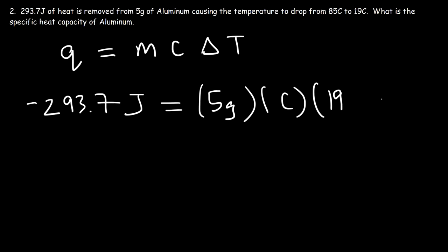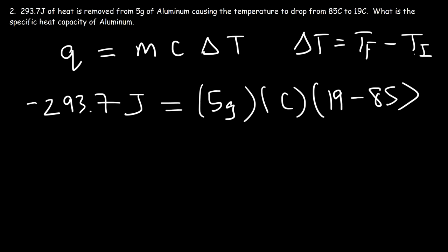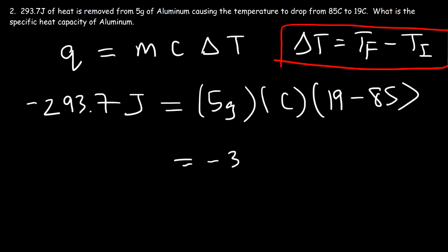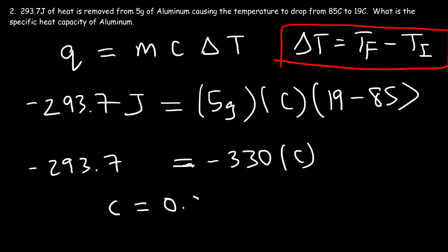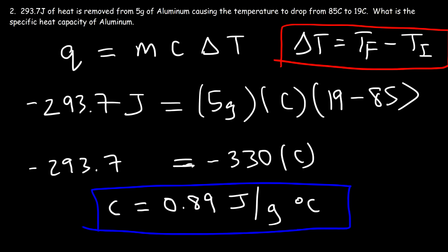The final temperature is 19 and the initial temperature is 85. Keep in mind, delta T is equal to the final temperature minus the initial temperature. So now all we have to do is calculate C. 19 minus 85 is negative 66. Multiply that by 5, that's negative 330. So we have negative 330 times C equals negative 293.7. C is negative 293.7 divided by negative 330, and the final answer is 0.89 joules per gram per Celsius — the specific heat capacity of aluminum metal.